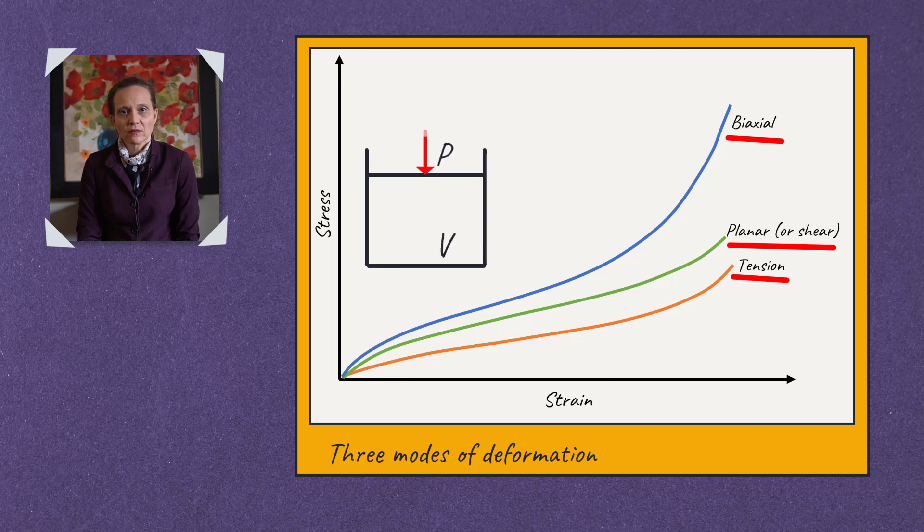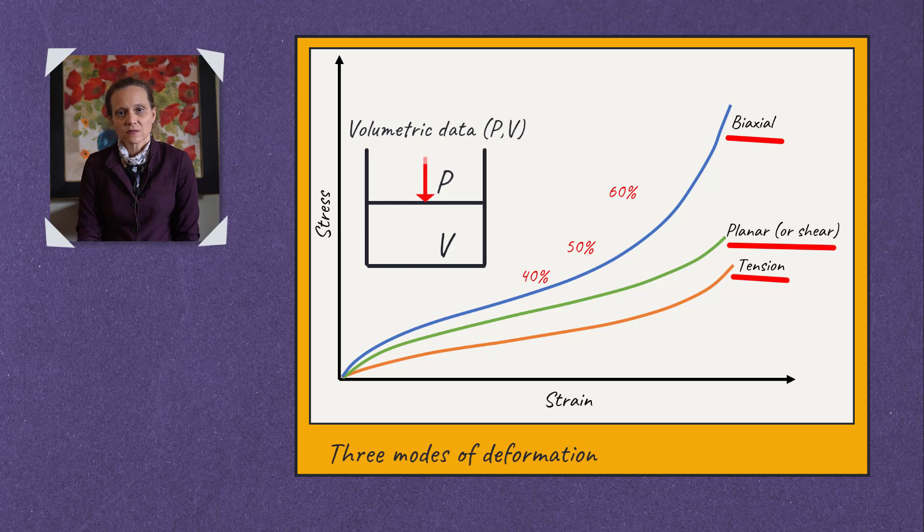In addition to these, we also perform confined compression tests to calculate its volumetric response. Together, these four data sets comprise a full set of data required to accurately calibrate hyperelastic materials. In case of materials that are either fully or nearly incompressible, one may ignore the volumetric data under the assumption that the material is fully incompressible.